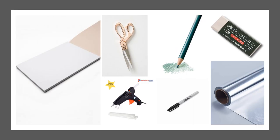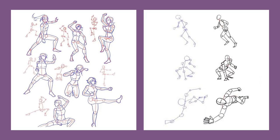Before we make our 3D tin foil figures, we are going to practice drawing some figures so that we understand the proportion of the human body. You'll need A4 white paper or any other paper, scissors, a pencil, an eraser, heavy duty tin foil, a black marker or sharpie, and a glue gun — it's optional, not a must. In your sketchpad, use these images as references and practice drawing human figures in your book.